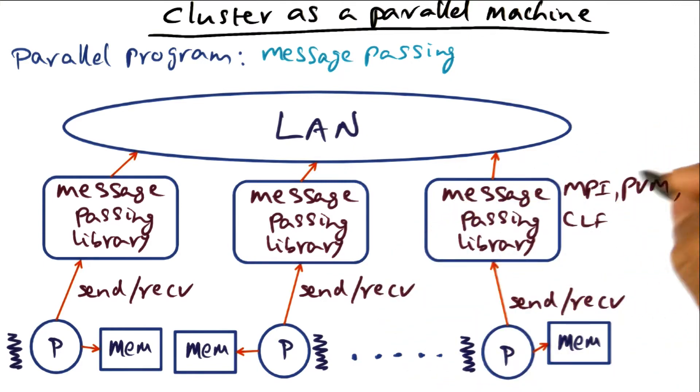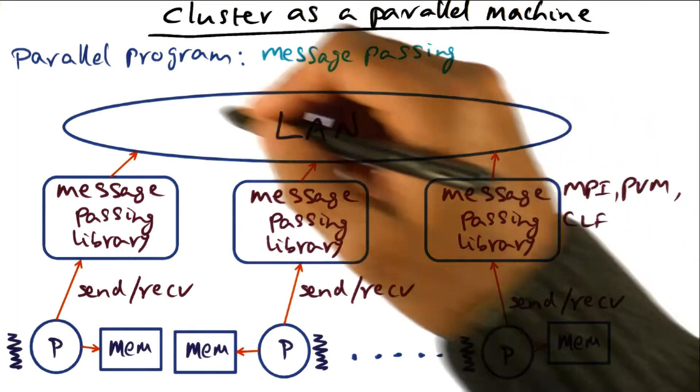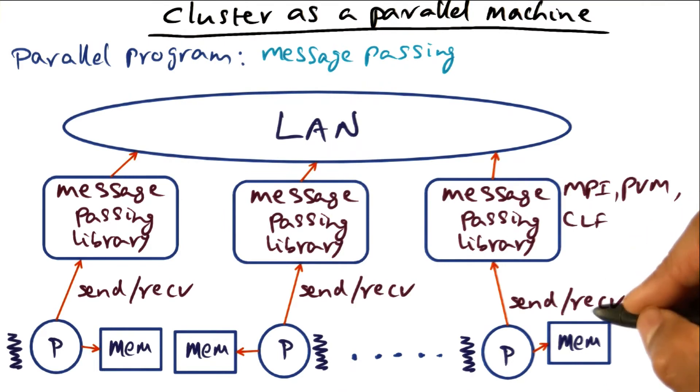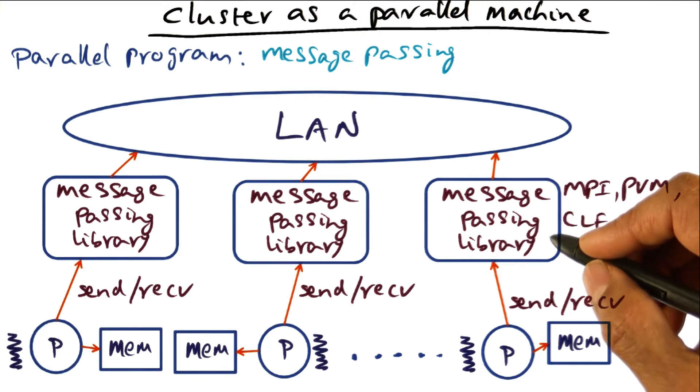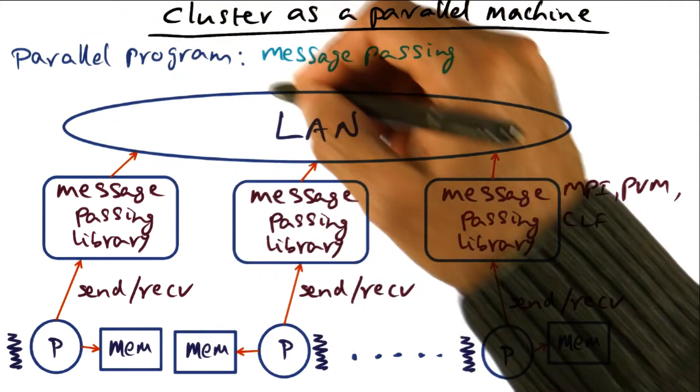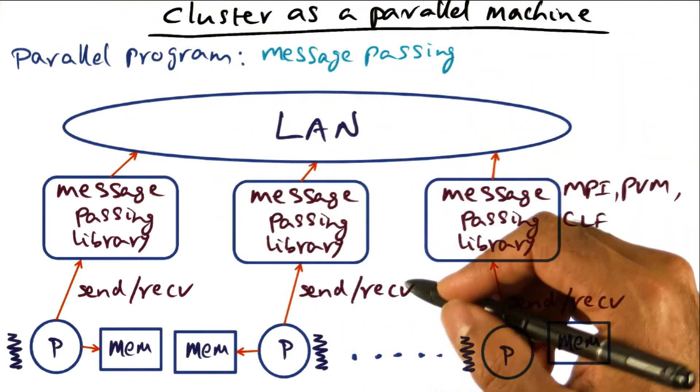And lots of examples of message passing libraries that have been written to support explicit parallel programming in a cluster. They include MPI, message passing interface, MPI for short, PVM, CLF from Digital Equipment Corporation. So these are all examples of message passing libraries that have been built with the intent of allowing application programmers to write explicitly parallel programs using this message passing style.